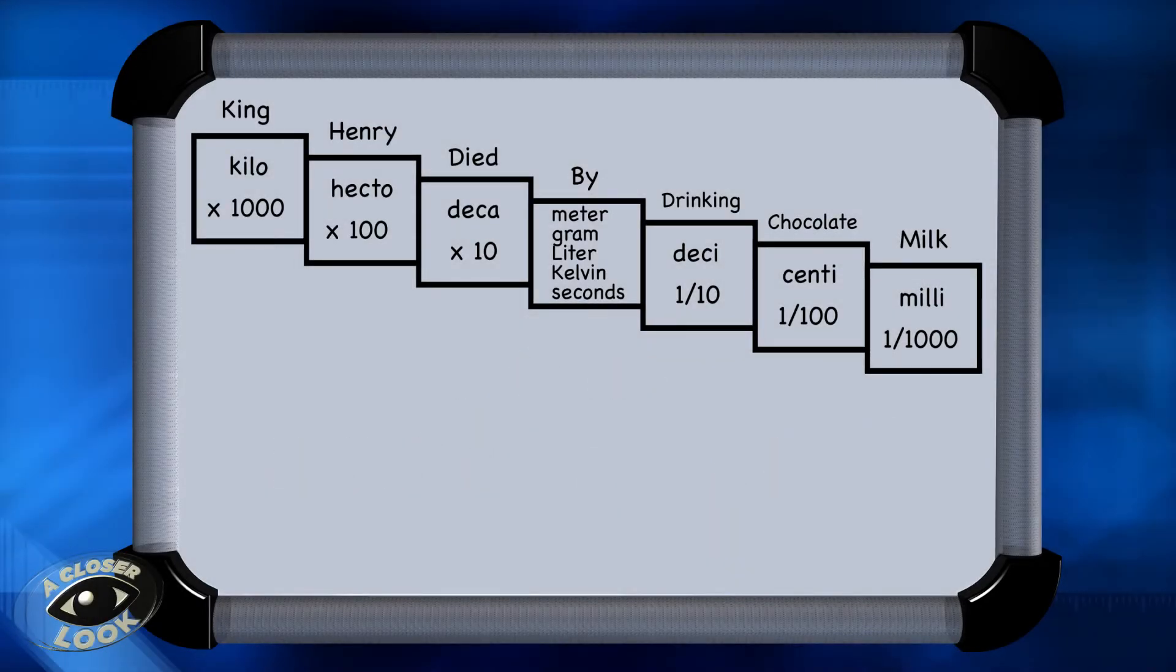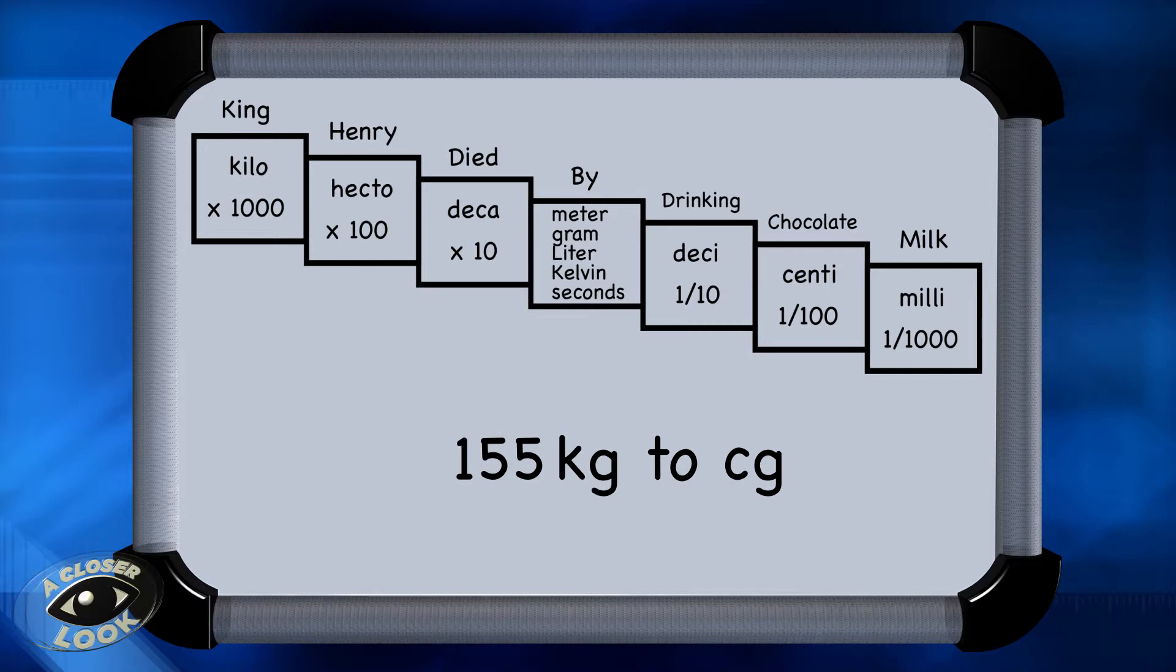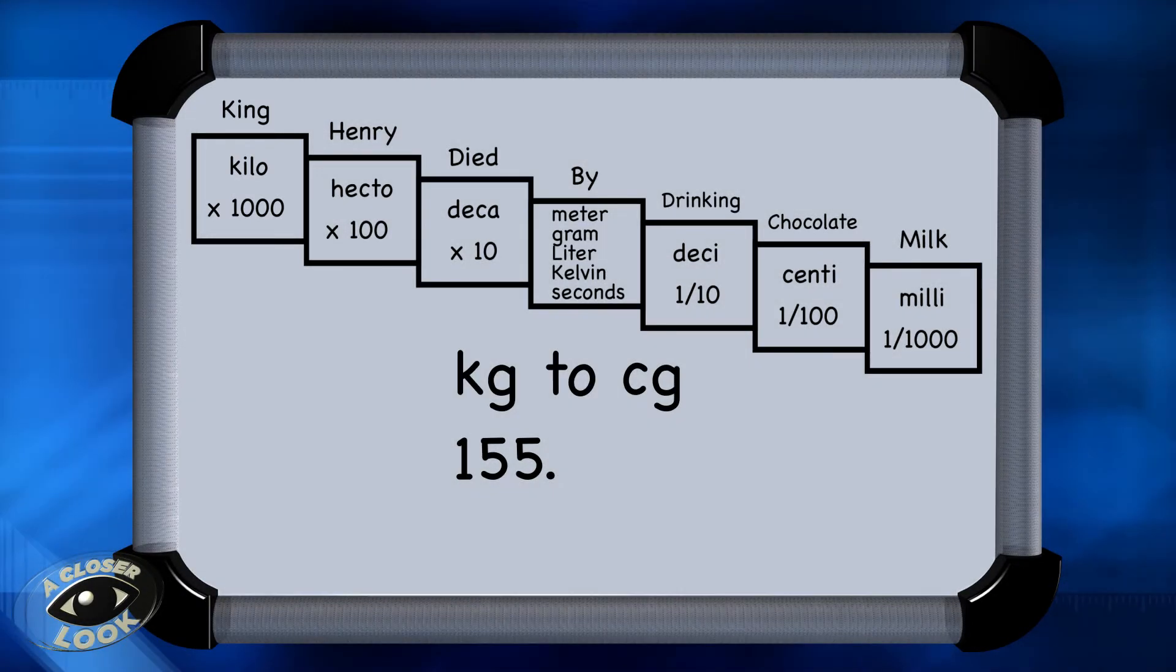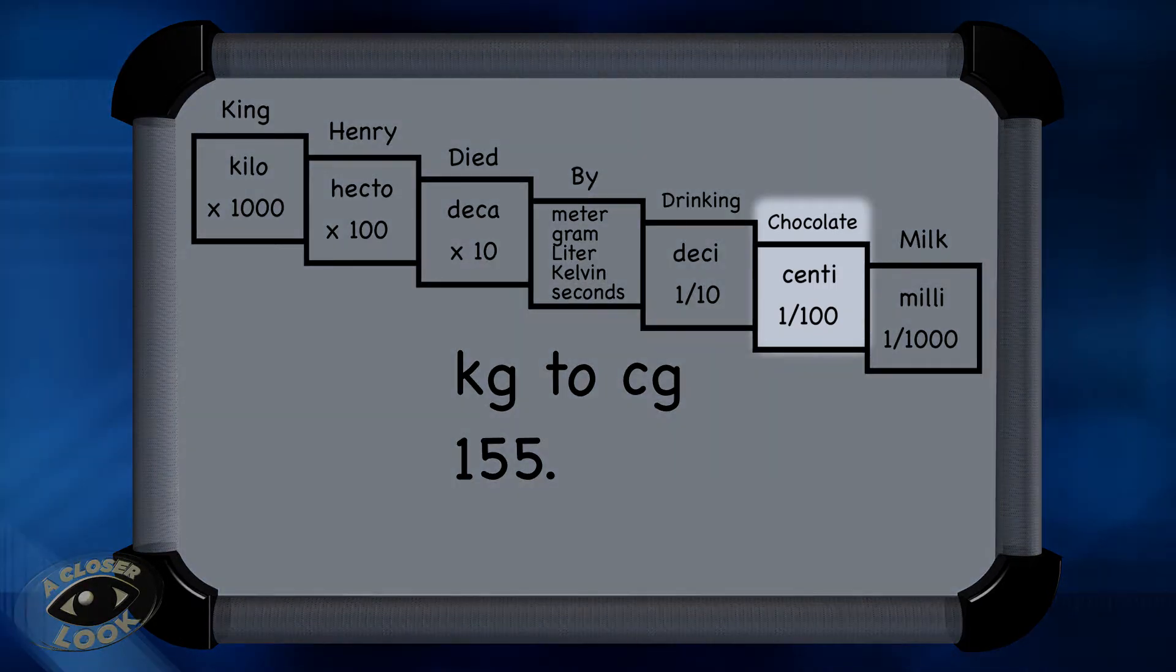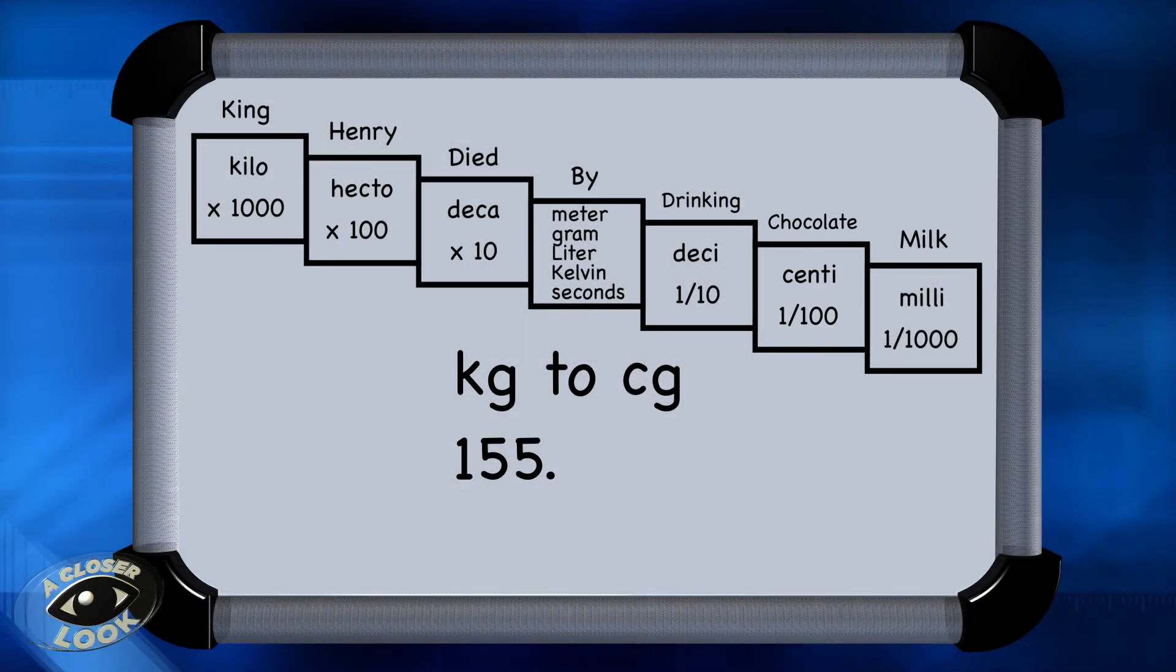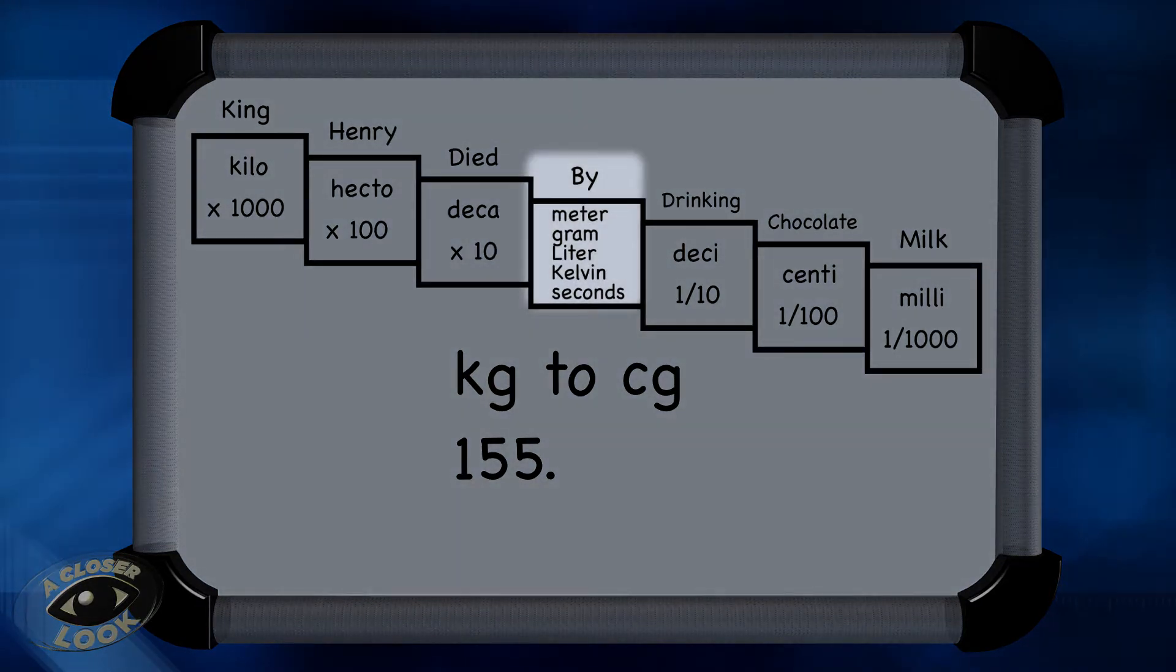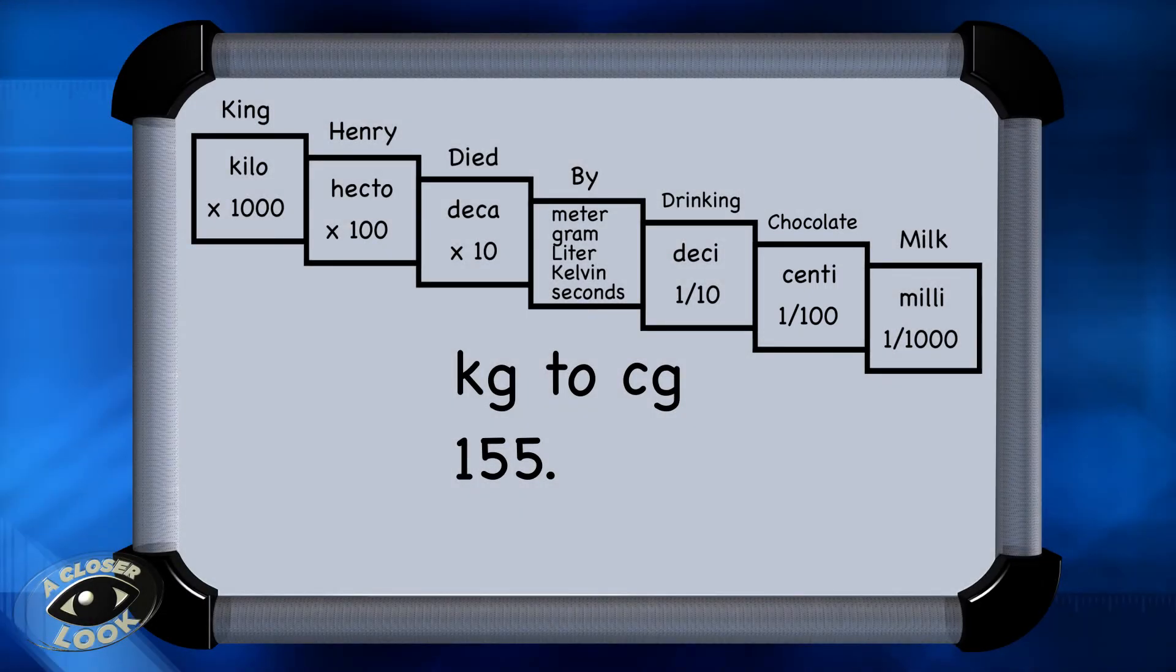The last problem asks us to convert from 155 kilograms to centigrams. Here are kilograms on our King Henry chart, and we want to convert all the way to centi. So we're going to move one, two, three, four, five places to the right.